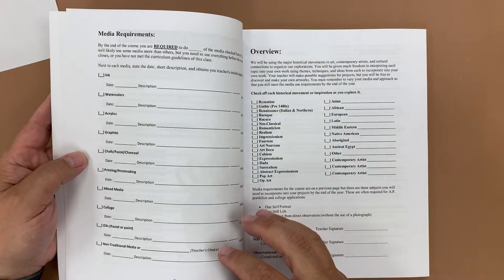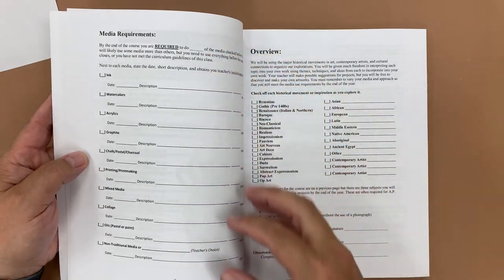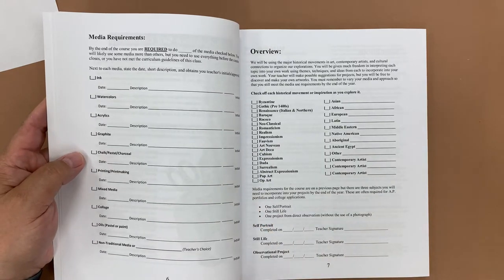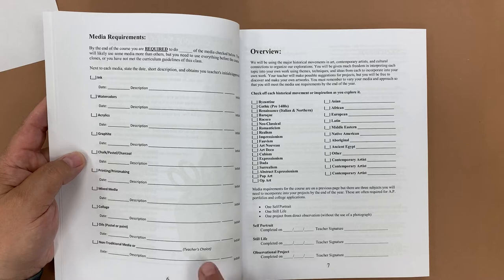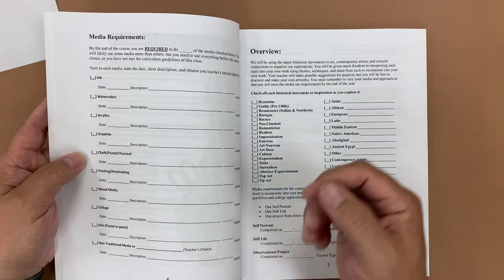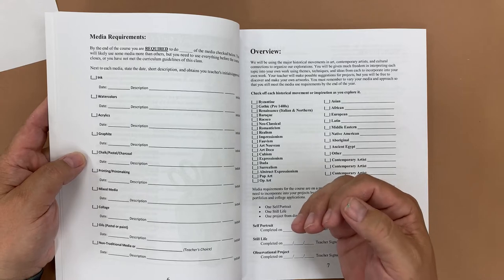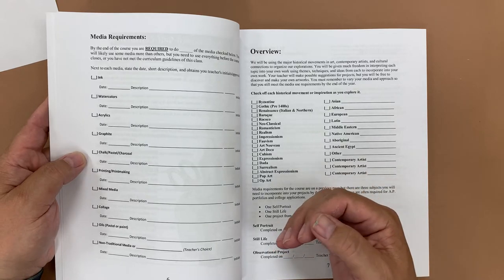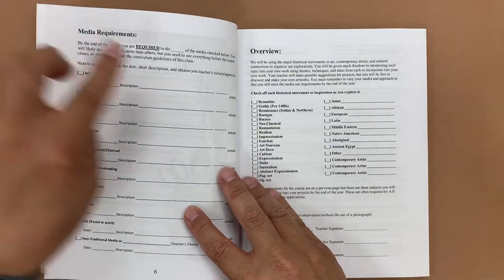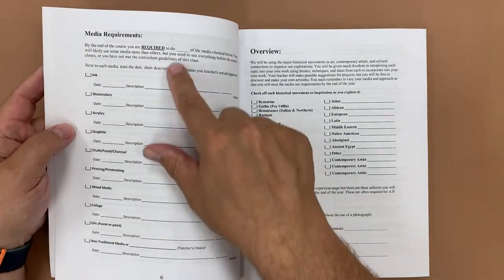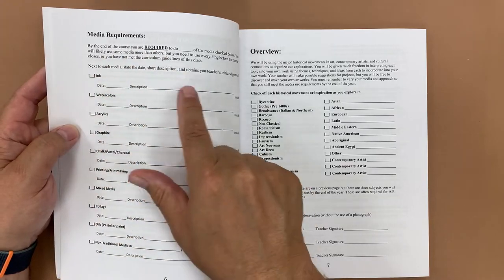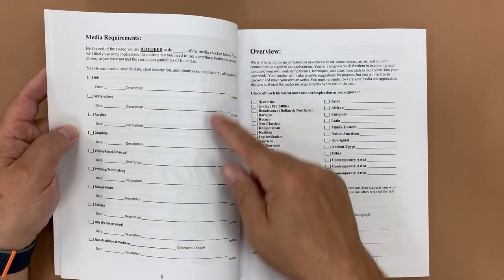I start the book with media requirements. These are kind of general media that are available in most art classrooms, and then non-traditional media or teacher's choice can be added there. So in a full year course, I ask that my students hit a certain number of these media so that they're exploring lots of things and not focusing in on one particular thing. So up here you're allowed to put in how many of these media need to be done, and as the student does it they can check it off, put a date, a brief description, and then the teacher can initial it.